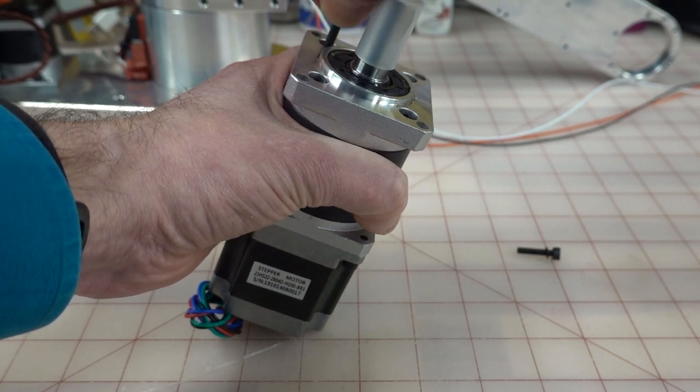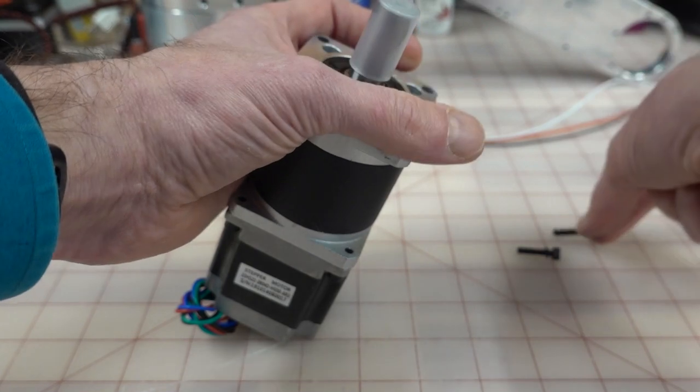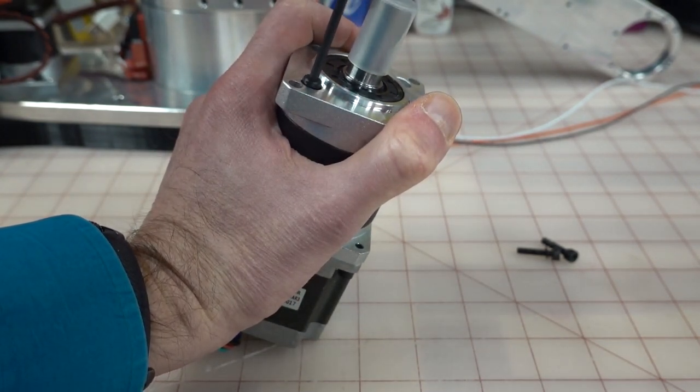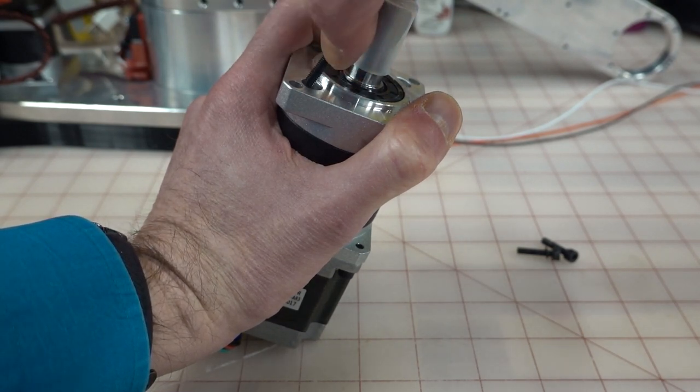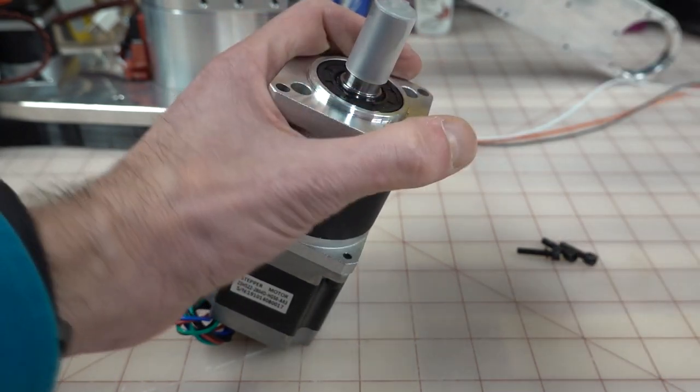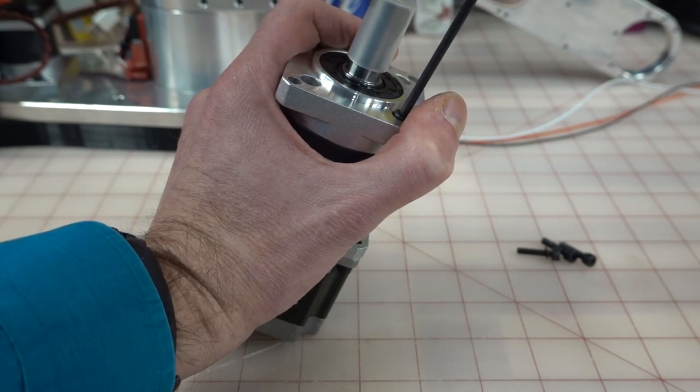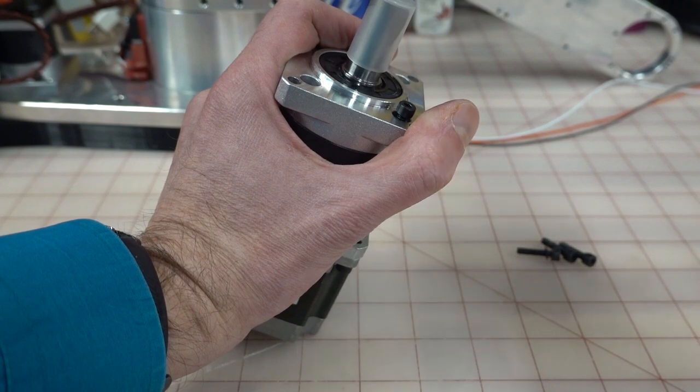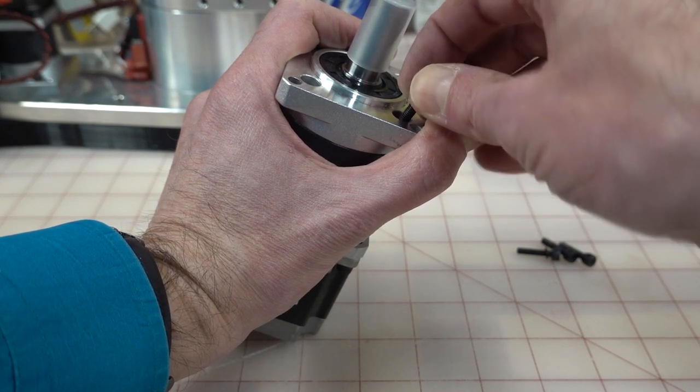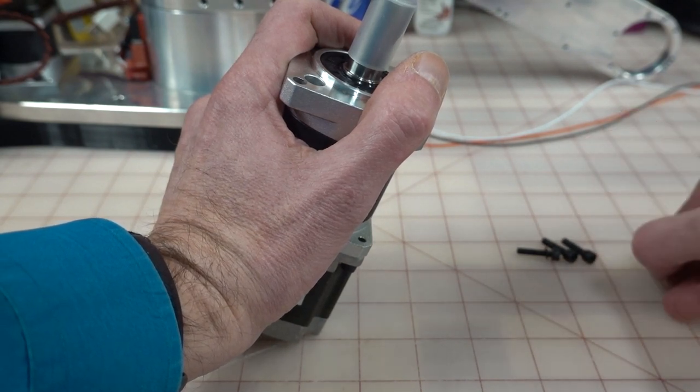Once you break them loose, they come right out. So get that out and hook the lock washer on the way out. Now we're down to two. This is the point where you want to keep a firm grip on this and make sure that it doesn't just fall apart. We got the lock washer and we're going to set that down all together.